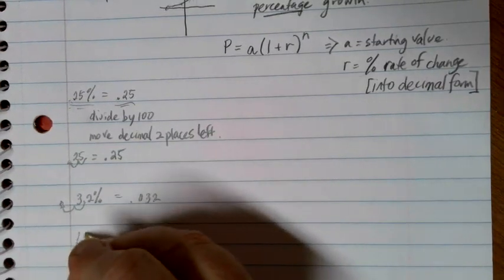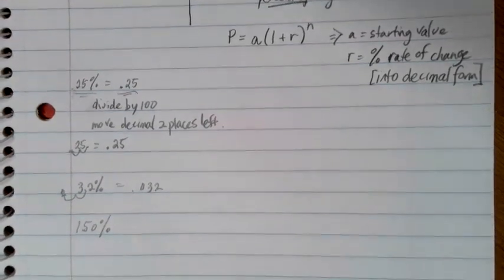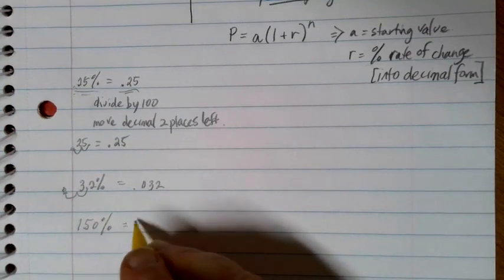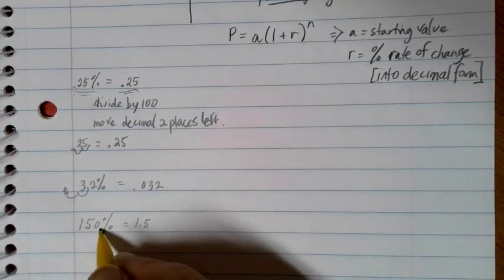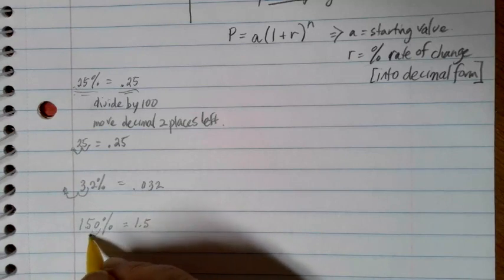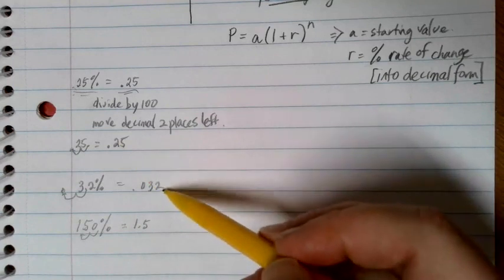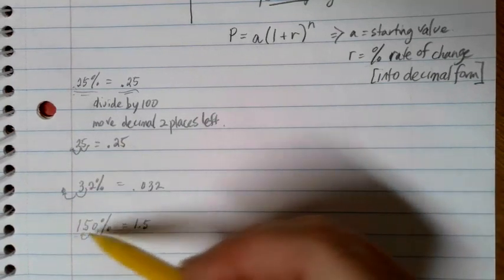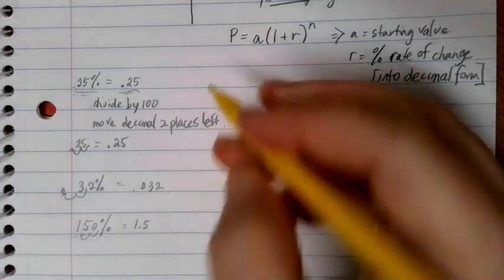If we have something like 150%, so something's growing really fast, still same thing. We can divide by 100, or we can move the decimal two places to the left. It's always at the end if you don't see one. One, two, that gets me 1.5. Generally, our percentages are going to be less than one, but if we're more than 100%, then we're going to be more than one here in our value answer.